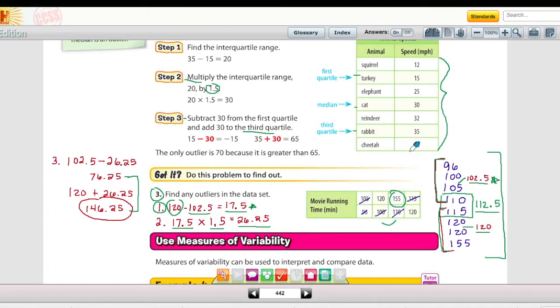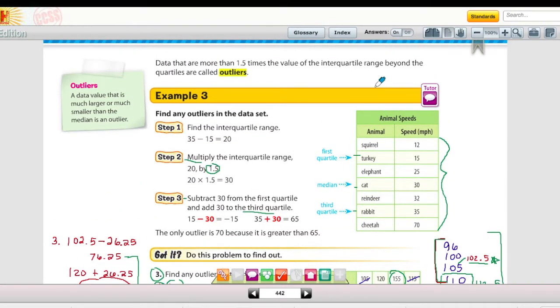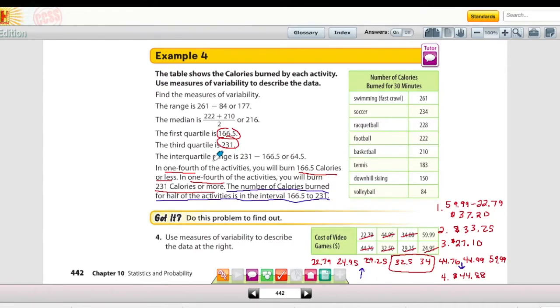Again, lots of steps, but go ahead and rewatch it, re-listen to it, and work through that example to make sure you understand how to find the outliers. Last example, because we're going to do the other one together in class, example five, page 442, example four.